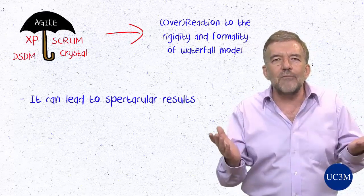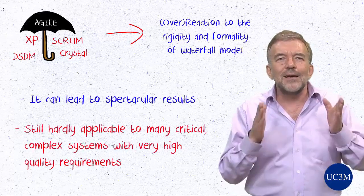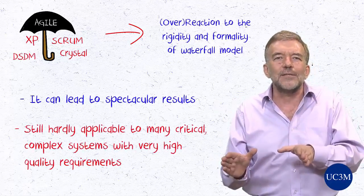Agile can lead to spectacular results under certain circumstances, but it is still hardly applicable for the development of many critical, complex systems with very high quality requirements. Thus, companies embarking on bespoke development must choose and follow an appropriate development methodology. If development is fully subcontracted to a consultancy, it will generally follow its own proprietary methodology; otherwise, the company must select one. Traditional methodologies based on the waterfall model can be somewhat rigid and bureaucratic; therefore, alternative and lately agile models have been developed. On the other hand, the alternative offered by open software is growing in importance and acceptance by corporate users, as we shall discuss in the next video.